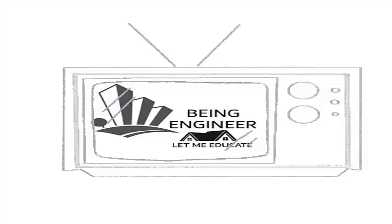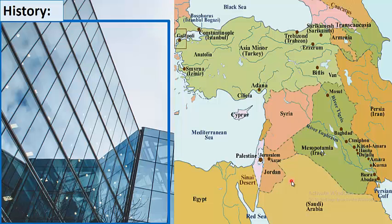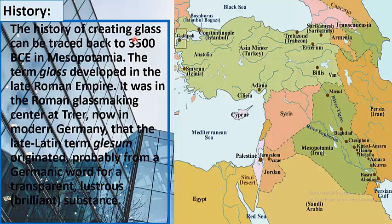First of all, the history. The history of creating glass can be traced back to 3500 BCE in Mesopotamia. The term 'glass' developed in the late Roman Empire. Mesopotamia, as you can see, is presently called Iraq. It was in the Roman glassmaking center at Trier, now in modern Germany, that the late Latin term 'glyceum' originated, probably from a Germanic word for transparent, lustrous, or brilliant substance.